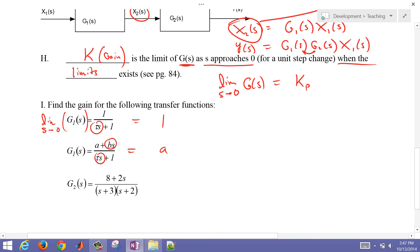And then this final one, as we plug in 0, then that's going to equal 8 divided by 3 times 2 or 4 thirds. So that's one way to get the gain.